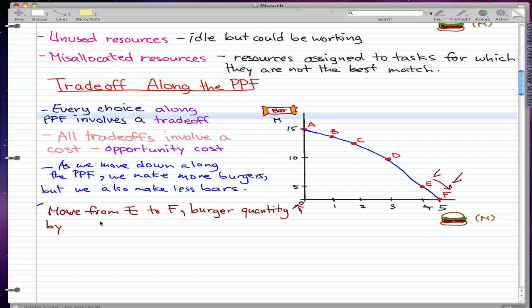But that is not all. We can also see that by increasing our burgers, our bars fell down from 5 million to zero. Bars fell 5 million.